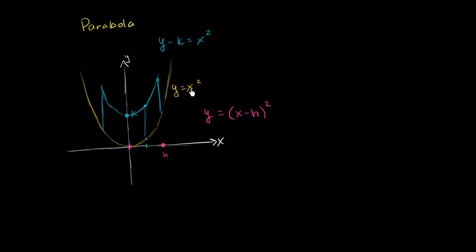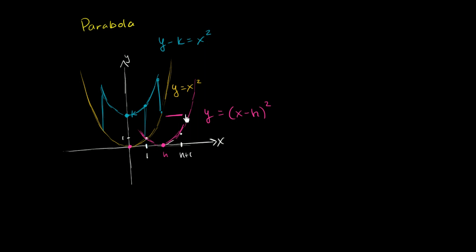Whatever value you're squaring to get your y, you now need an h higher x-value to square that same thing, because you subtract h from it. To square 0, x must equal h. To square 1, x doesn't just need to be 1 — it needs to be h plus 1. So squaring x minus h instead of x shifts the curve to the right by h.